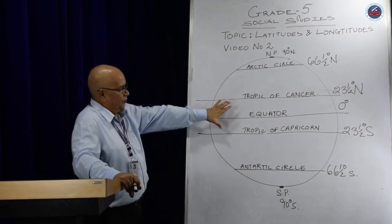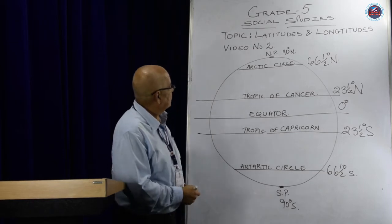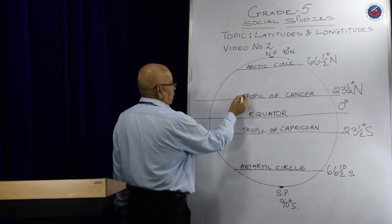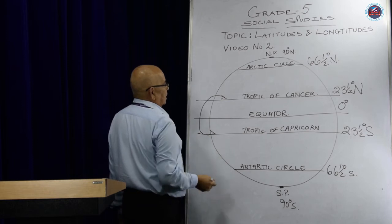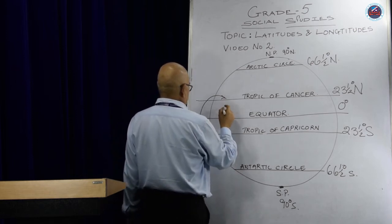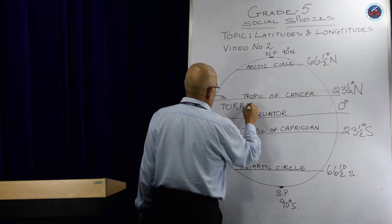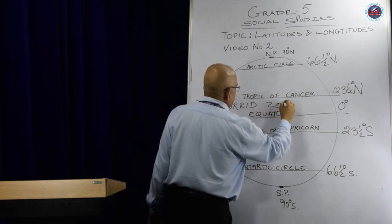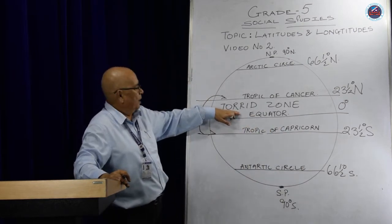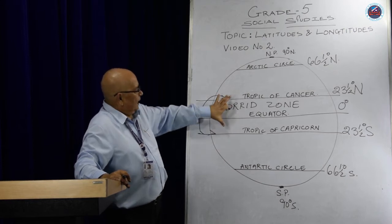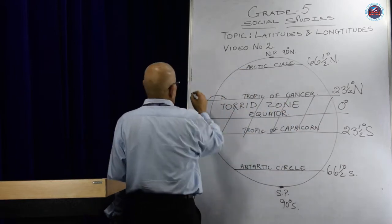Latitudes are important because they divide our earth into heat zones. From the Tropic of Cancer to the Tropic of Capricorn, this is known as the torrid zone — another word we can use is the tropical world. This area is where everything is hot.